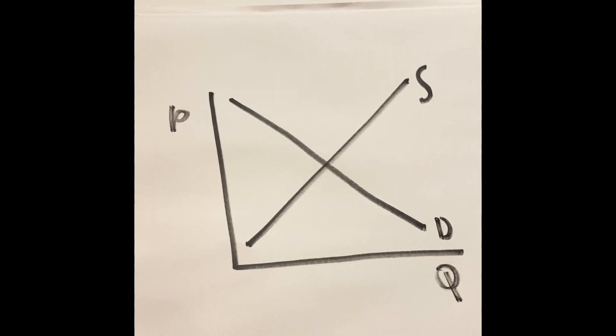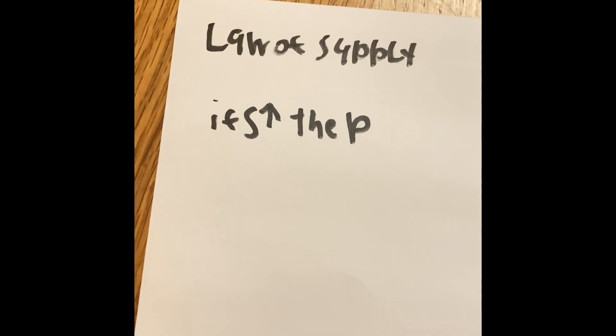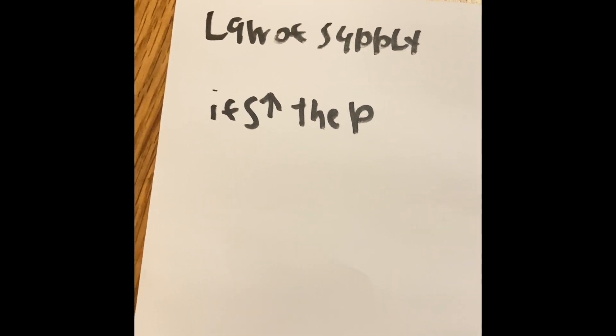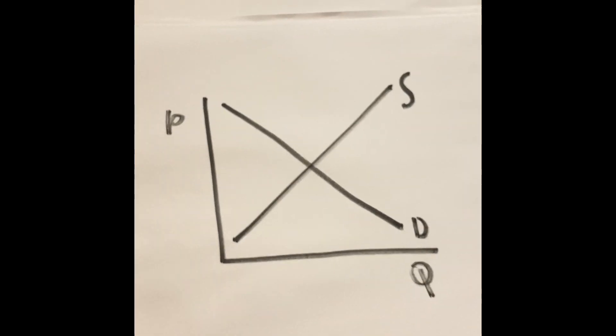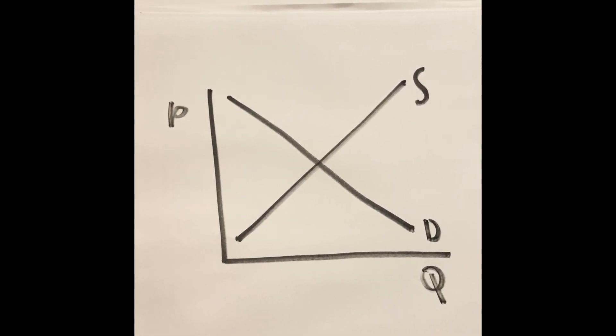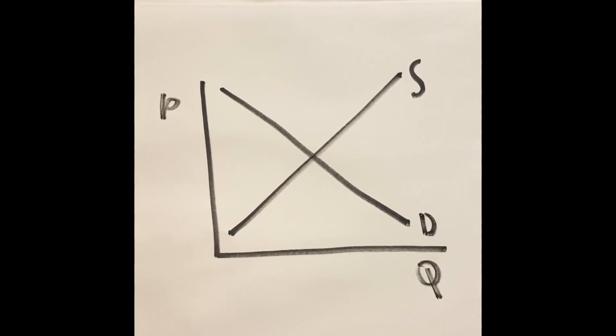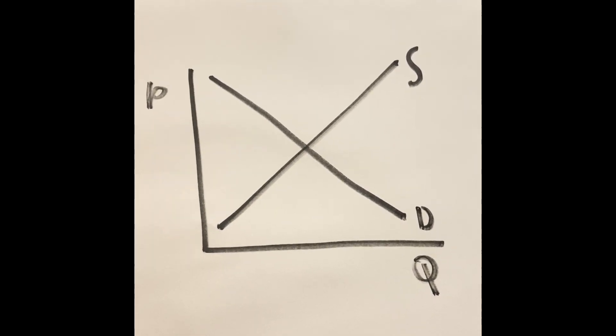That is the law of supply. If the supplies go up, then the price of them have to go up as well. Now, we'll take a look at the law of demand. From the graph, if you look at the slope of the letter D, it talks about how if the price is going to stay up, then the demand is going to go down.